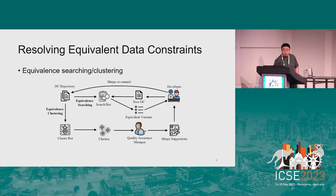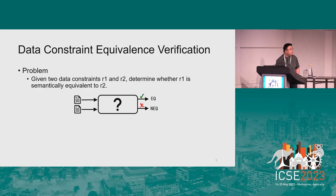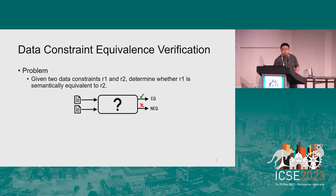The clustering information can be forwarded to developers to guide the further merge process. In this work, we focus on the fundamental problem of data constraint equivalence verification. Given two data constraints R1 and R2 as inputs, we want to design a decision procedure to check whether R1 is semantically equivalent to R2.